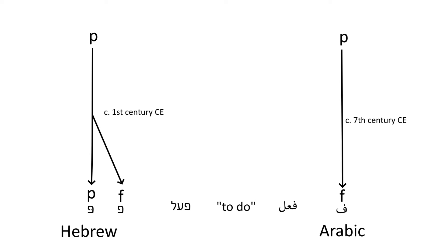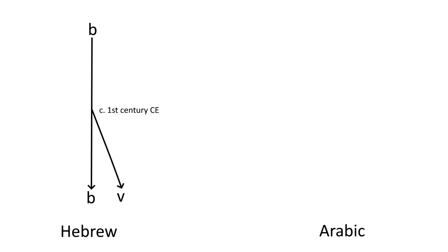Next, B, same thing. Hebrew went through Begadkefet, changing plosives after a vowel into a fricative. Thus many B become V. Arabic kept all the B's intact. So compare Arabic kalub versus Hebrew kelev, dog.